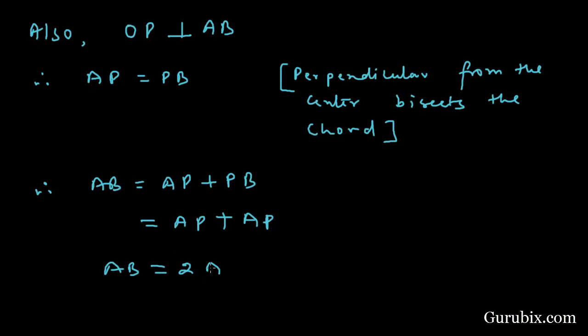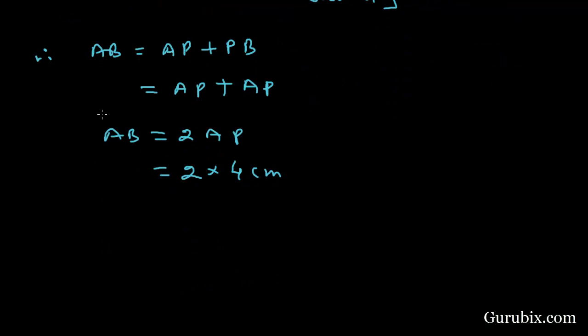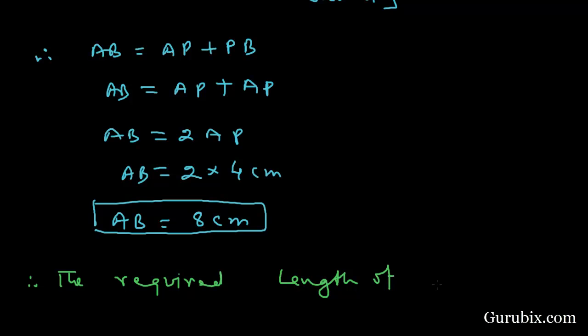This means AB equals 8 centimeters. So the required length of the chord equals 8 centimeters. This is the solution of the question. Thank you.